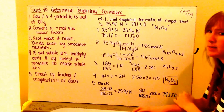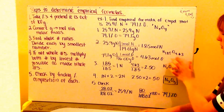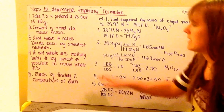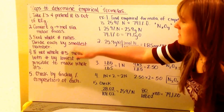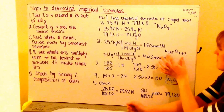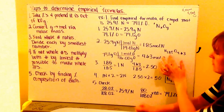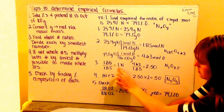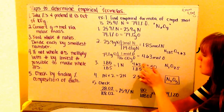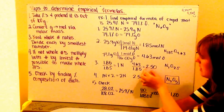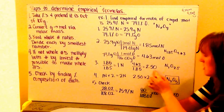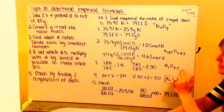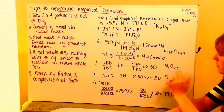Now I wouldn't write my equation as N1.85O4.63 because I need these both to be whole numbers. So step three: divide each by the smallest number, which is 1.85. My nitrogen: 1.85 divided by 1.85 is 1. My oxygen: 4.63 divided by 1.85 gives me 2.5. Now I have N1O2.5, and I still haven't achieved whole numbers for both of them.